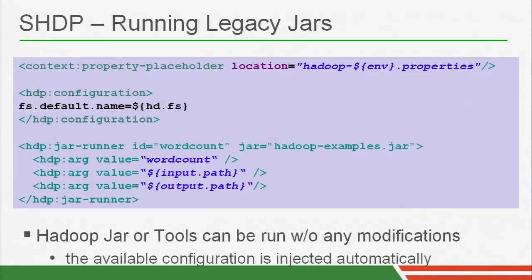We spent a lot of time making sure people already using Hadoop don't have to rewrite their applications. If you already have legacy JARs of jobs, we support those as well. One nice thing is you can change the configuration — pick another configuration and you don't have to repack your JAR. When we start up your JAR, we automatically configure Hadoop and inject the proper configuration inside it, so you don't have to rewrite anything.